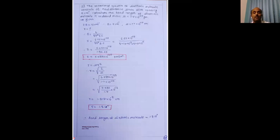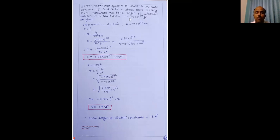Numerical example 2: The rotational spectra of a diatomic molecule consists of equidistant lines with spacing 10 cm⁻¹. Calculate the bond length. Reduced mass μ = 1.7 × 10⁻²⁷ kg is given. The molecule name is not given, but since reduced mass is provided, it is not necessary to know it. Spacing = 2B = 10 cm⁻¹, so B = 5 cm⁻¹. Using B = h/(8π²Ic) to get I, then R = √(I/μ) = 1.81 Å.